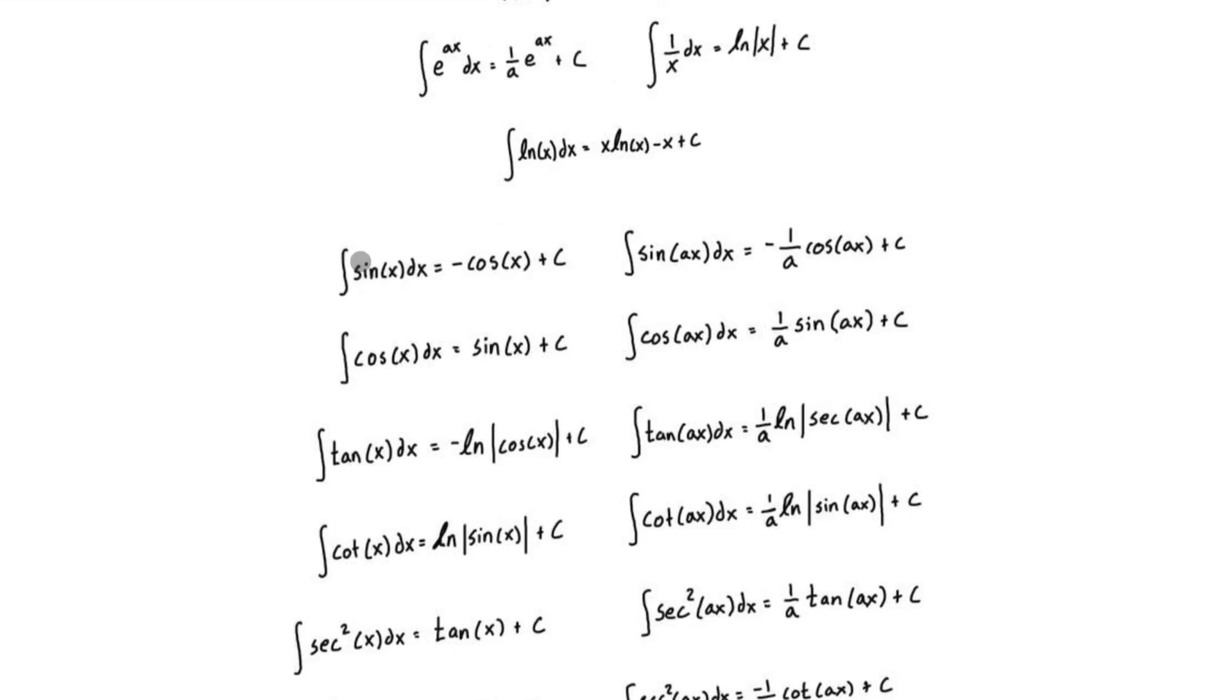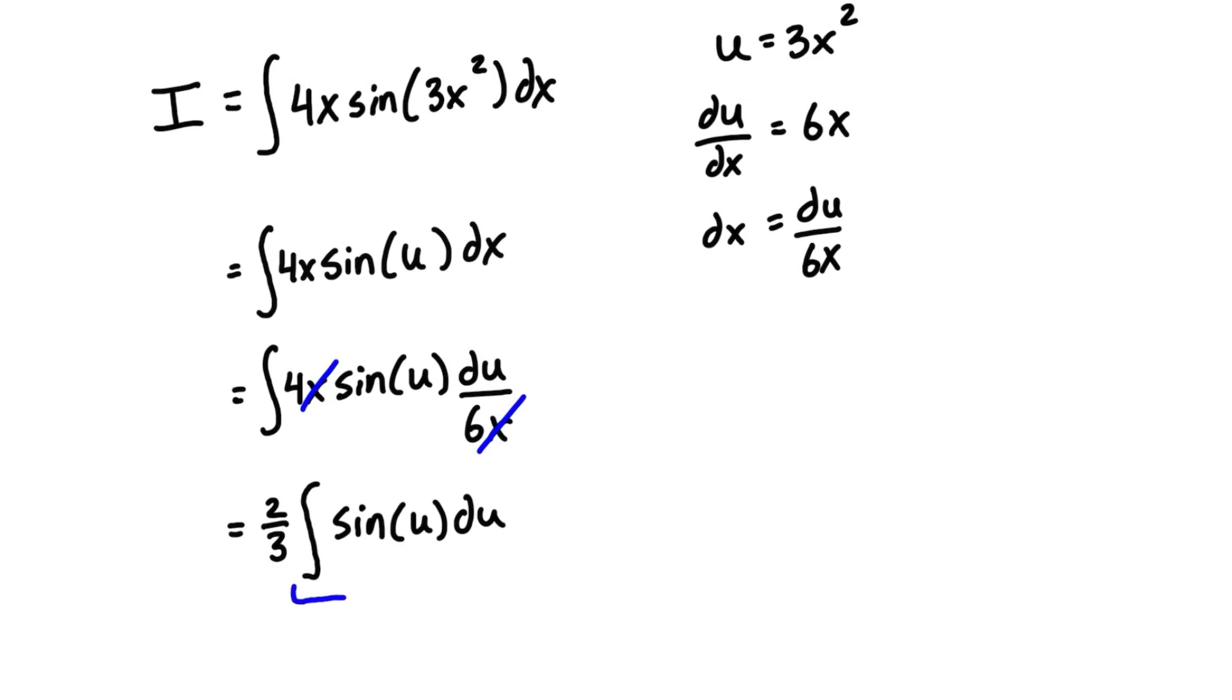So anytime you have an integral in this form, you can immediately replace this whole thing with the solution. In this case, it's a negative cos of x plus c. So let's bring that back into our worksheet. And basically we're just going to be replacing this whole thing. We can even write it down here. So we have the integral of sine of u du is equal to negative cos of u plus c. So we're just going to substitute this part exactly for this part. So that's going to give us negative two-thirds times cos of u plus the arbitrary constant c.